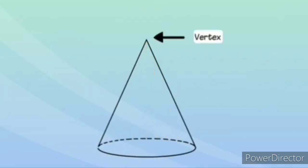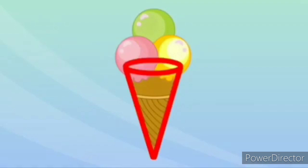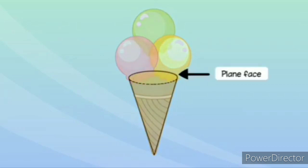A cone has one vertex and one circular edge, where the curved surface meets the plane surface. Let's look at the ice cream cone once again. It has one plane surface, one curved face, one vertex and one edge.